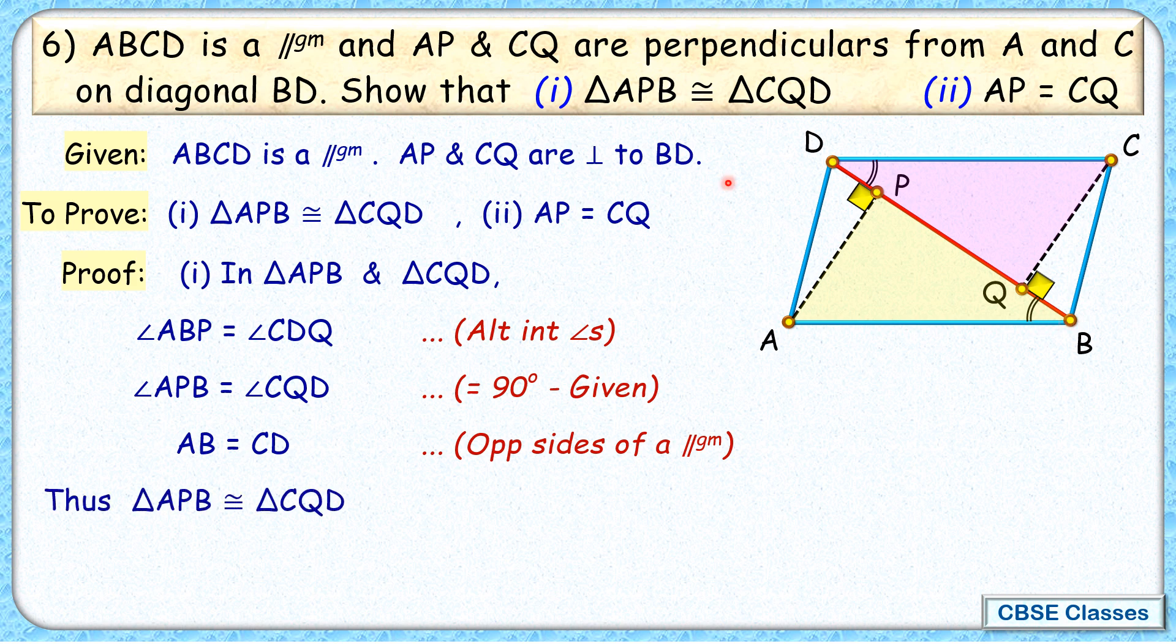Thus we can say that these two triangles, APB and CQD, are congruent to each other by AAS congruency. And that was the first result we had to prove.